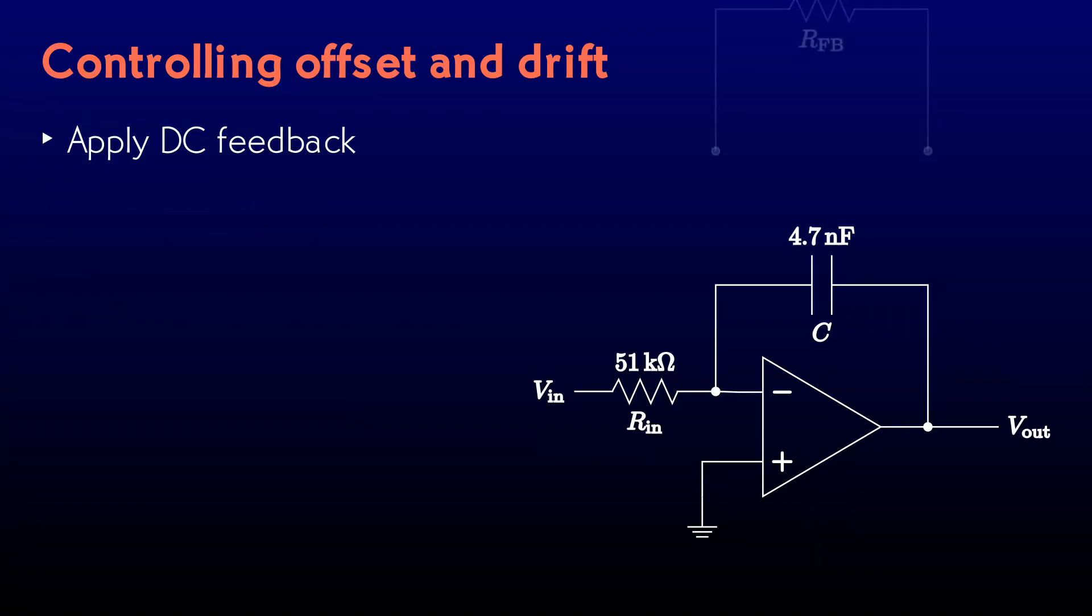The first approach involves putting in a DC feedback path. The resistor's value is high enough that the capacitor will take virtually all the current at signal frequencies, and the integration works just like before. At DC, the capacitor is an open circuit, and what we have here is an amplifier with a gain of 200.